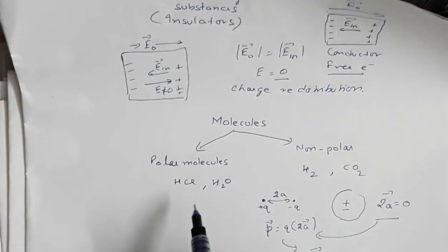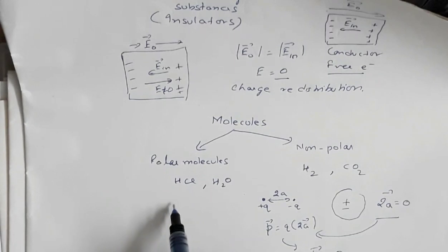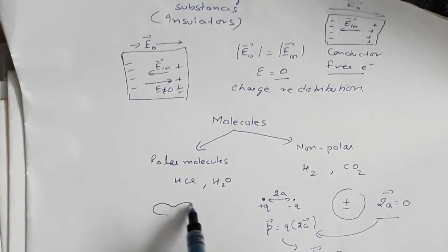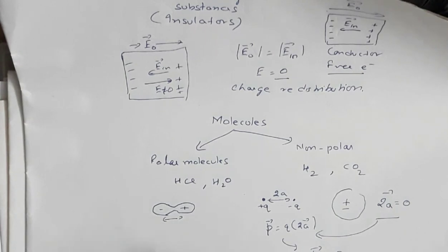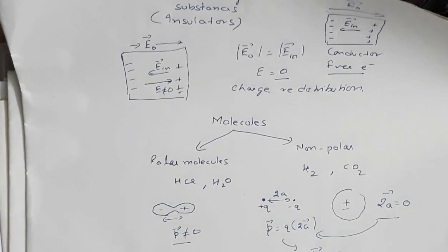Now what are polar molecules? For example, HCl, hydrogen fluoride, or water. In polar molecules, the cloud of positive charge and the cloud of negative charge are separated by a small distance. So the dipole moment is not equal to zero. Individual molecules have a dipole moment even in the absence of an electric field. These are the two basic types of molecules — polar and non-polar — and based on this understanding, we will study the behavior of a dielectric in an external electric field.